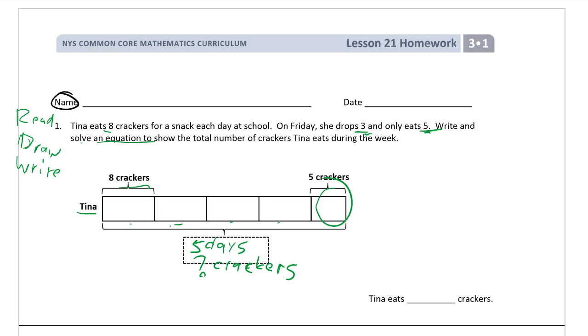We know how many days there are. Here we know there's 5 days. What we don't know is the total number of crackers. That's what we have to figure out. Now she eats, these are 8s: 8, 8, 8, 8, but this day is a 5.